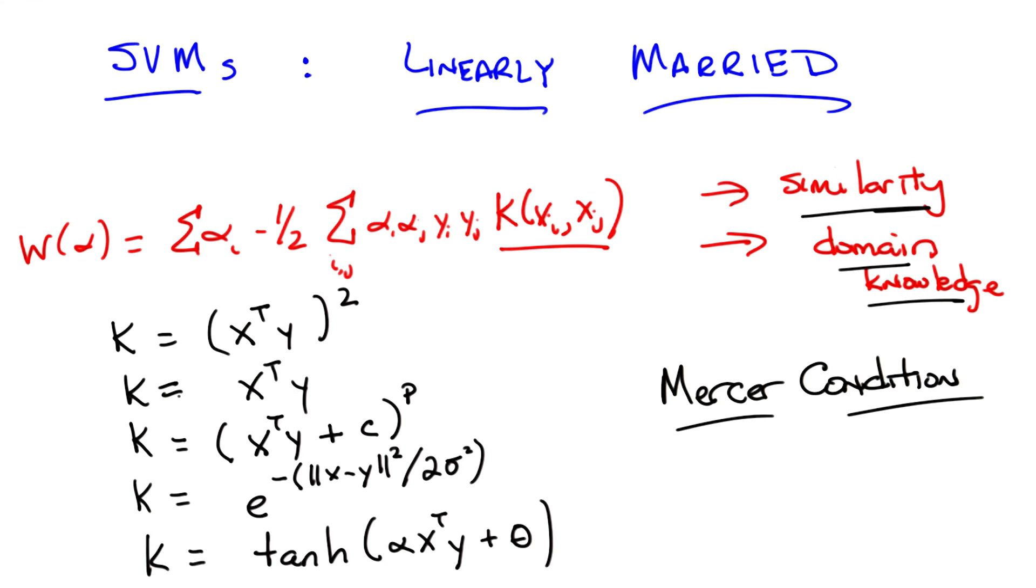No, so the Mercer condition is a very technical thing. We'll talk about this again a little bit in a homework assignment. But for your intuition in the meantime, it basically means it acts like a distance or it acts like a similarity. It's not an arbitrary thing that doesn't relate the various points together. Being positive semi-definite in this context means it's a well-behaved distance function. Gotcha.